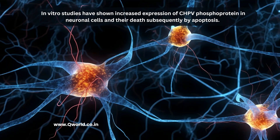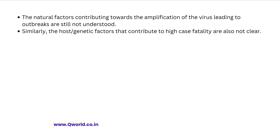This virus mainly causes encephalitis. The exact model of pathogenesis is yet to be discovered, but in vitro studies have shown that it causes increased expression of phosphoprotein in neuronal cells and induces neuronal cell death by apoptosis. The natural factors contributing to amplification of the virus leading to outbreaks are still not understood. Similarly, the host or genetic factors contributing to the very high case fatality rate of 40 to 60 percent are still not clear.